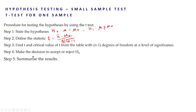Then the next step is we have to make the decision to accept or reject H₀. We have to compare the critical value of t with the calculated value of t and accordingly make the decision. Finally we have to summarize the results based on what is asked in the question. These are the steps involved in the t-test for one sample.